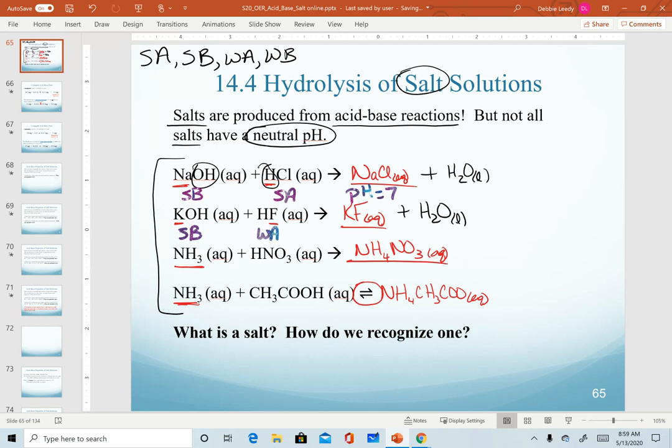In our second example, we have a strong base with a weak acid. In this combination, we predict our salt to be basic to have a pH that's higher than seven because of the strength of our strong base.